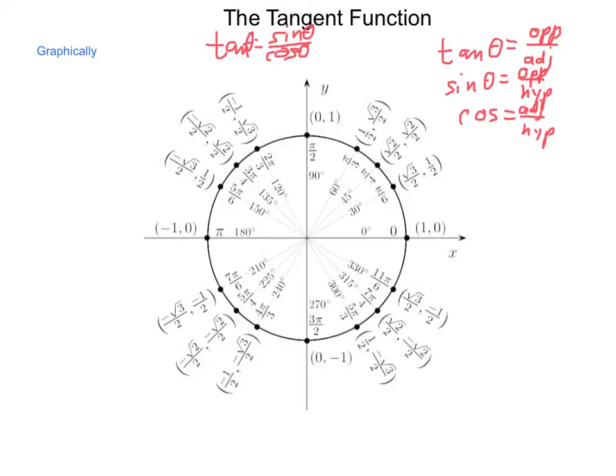If we take opposite over hypotenuse and divide it by adjacent over hypotenuse, we would multiply by the reciprocal. The hypotenuses would simplify out to 1 and we'd be left with opposite divided by adjacent.